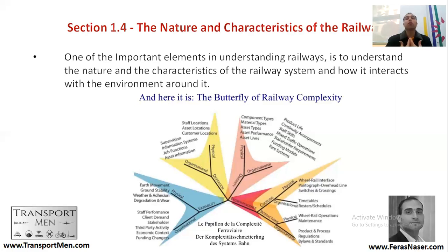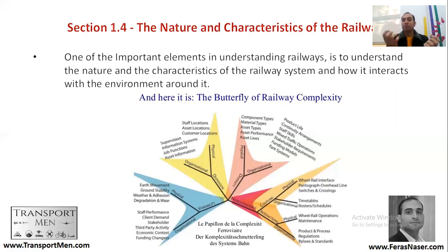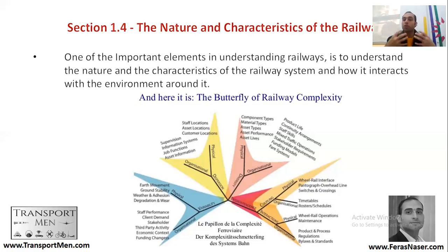The fourth aspect, and perhaps one of the most important, is interdependence. Railway systems and subsystems are interdependent on each other. The wheel is dependent on the track and the track is dependent on the wheel. This system is in continuous change because of its interaction with the environment, operational requirements, and human intervention.